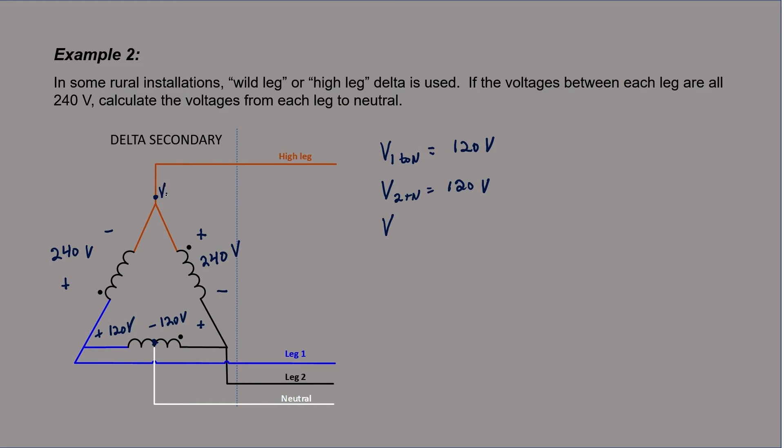We can define our neutral point as zero volts, and if we want to then calculate the voltage between the high leg and neutral, we can use KVL. It's the voltage from two to neutral added to the voltage from phase H to phase two. Now, we can't add them in RMS values. We're going to have to convert them to phasors in order to handle the fact that these voltages are out of phase with one another.